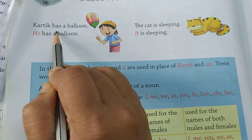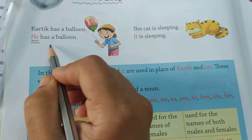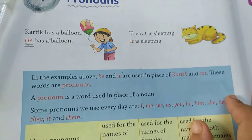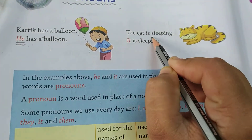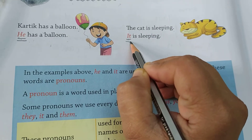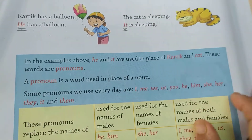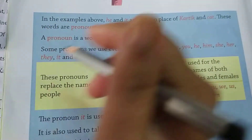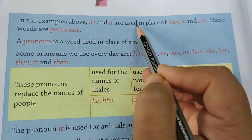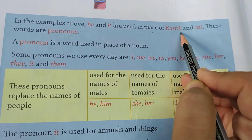Here is another example: Karthik has a balloon. So instead of Karthik, we say he has a balloon. That 'he' is the pronoun. Another example: The cat is sleeping. Instead of cat, we say it is sleeping. So 'it' is the pronoun. In these examples, 'he' and 'it' are used in place of Karthik and cat.